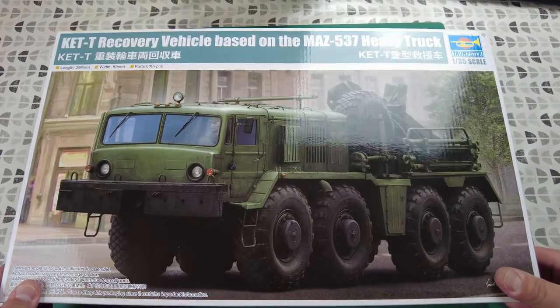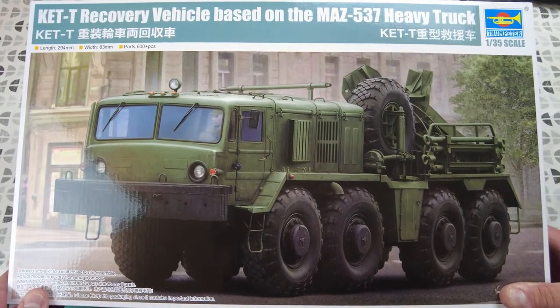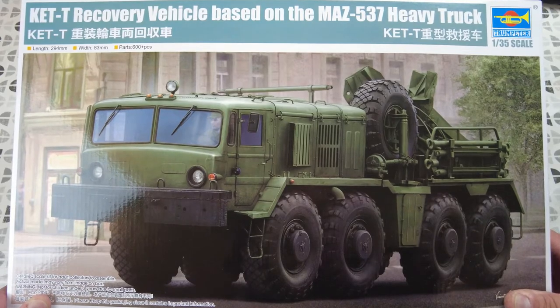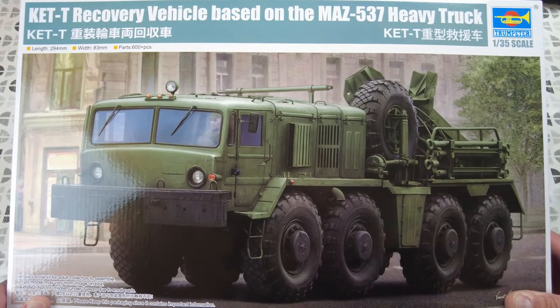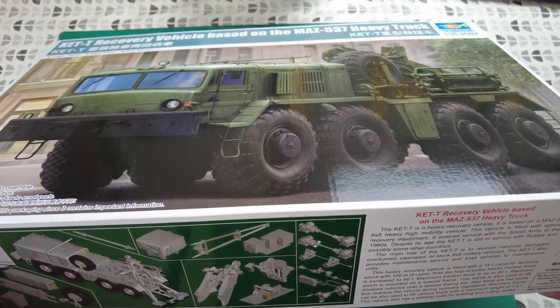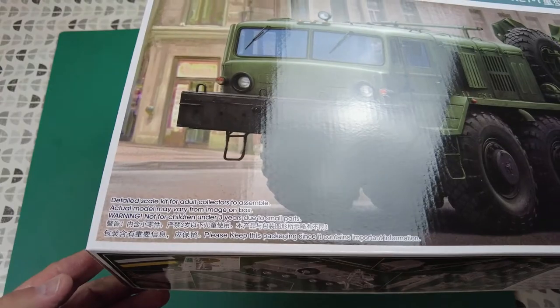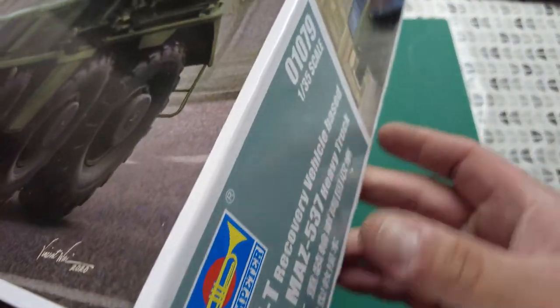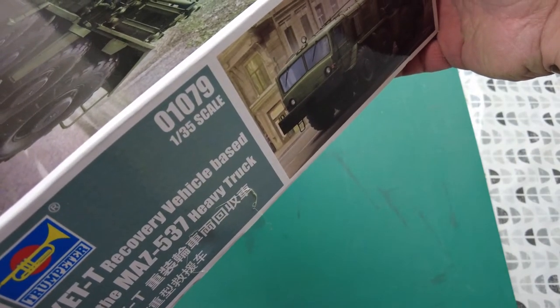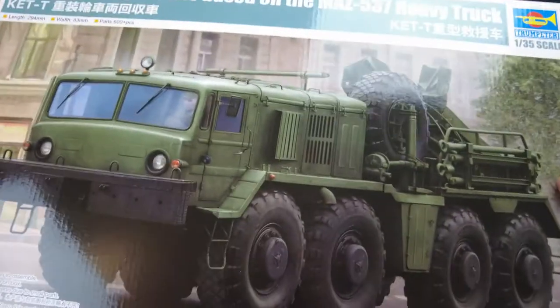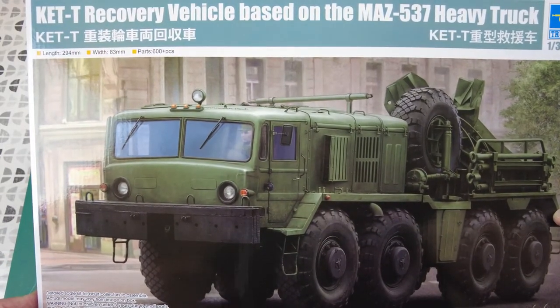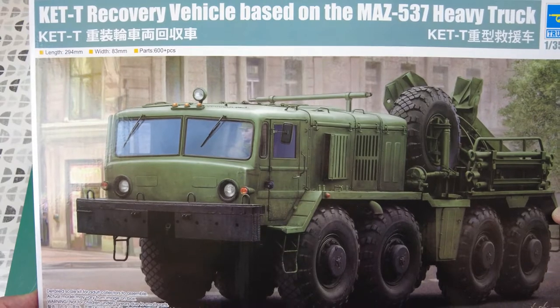So we're on the table, excuse the glare, the lights are a bit shiny on this box. KET recovery vehicle based on the MAZ 537 heavy truck. This is Trumpeter kit number 01079, 1:35th scale. Looking at the particulars on the box, it's 294mm long, 83mm wide, 600 plus parts.